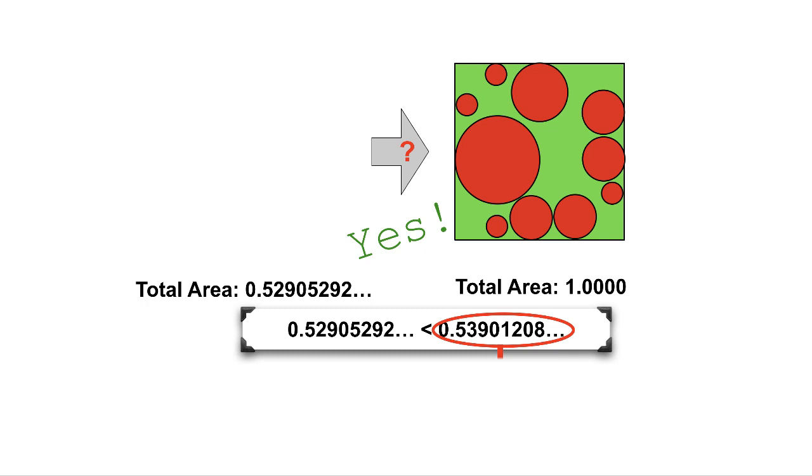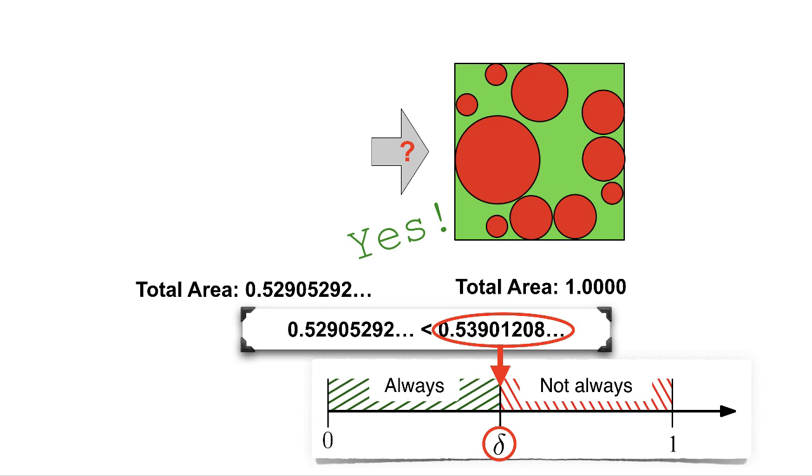As we will see, the value 0.5390 is a magic number, the critical packing density. Any set of circles below this threshold can be packed, and for any larger value, unpackable instances exist. This is where other, more involved algorithmic approaches may be needed to decide the existence of a packing.